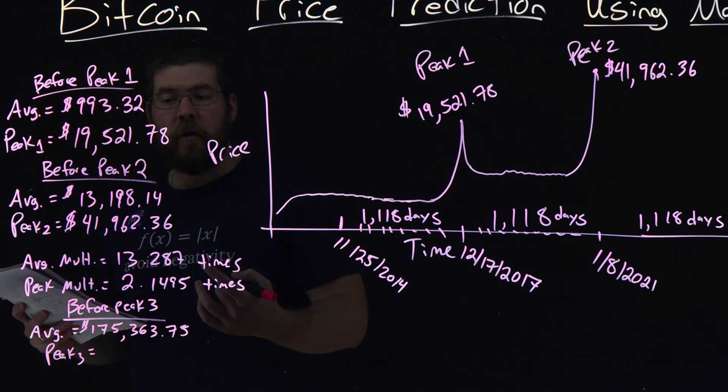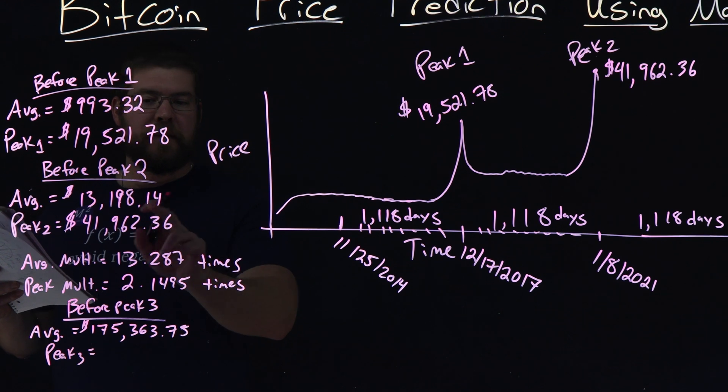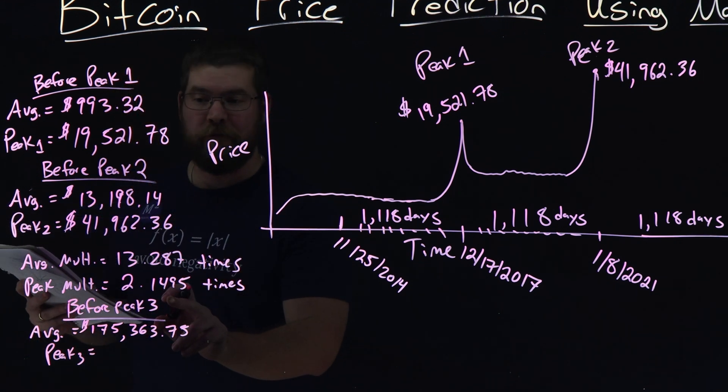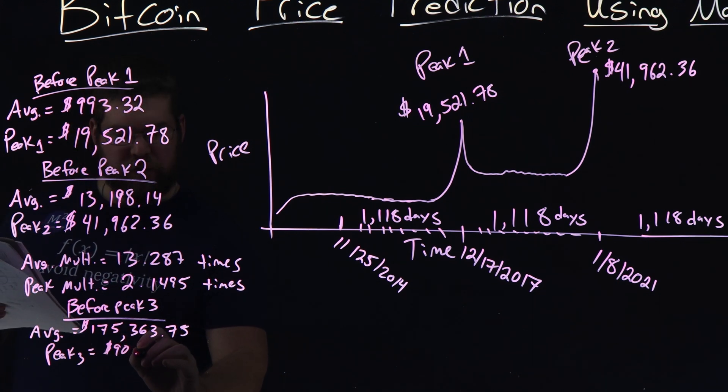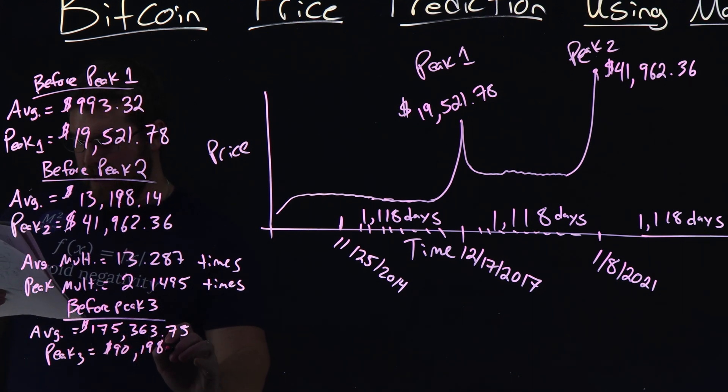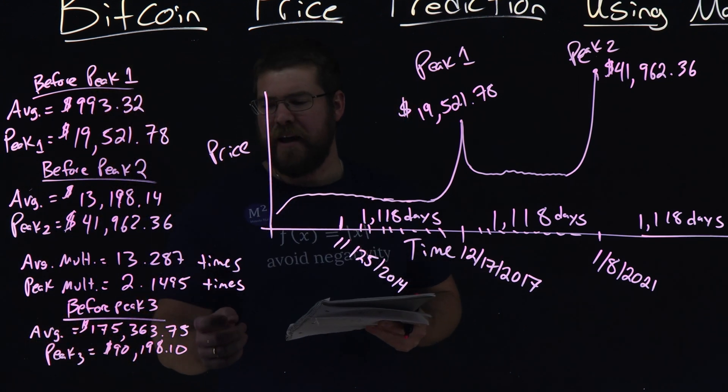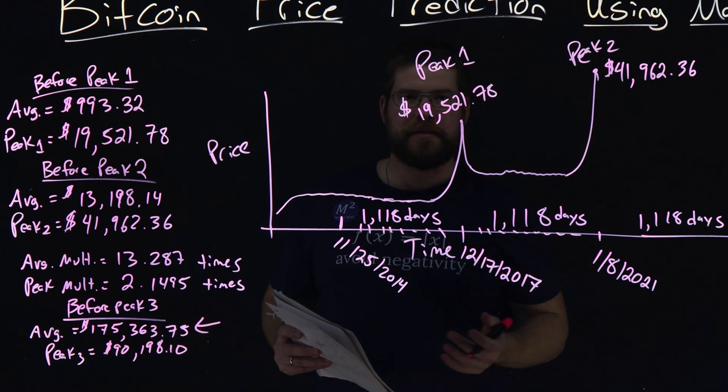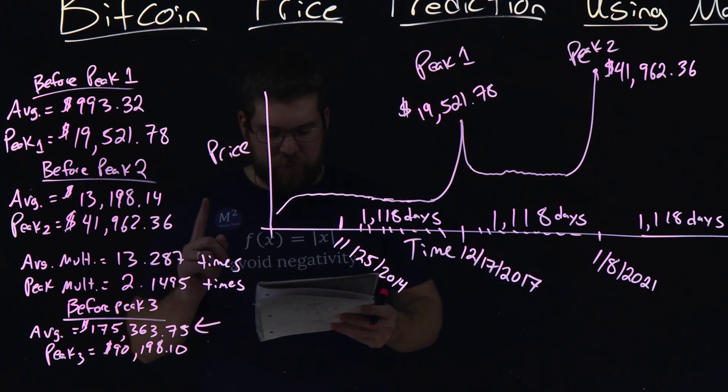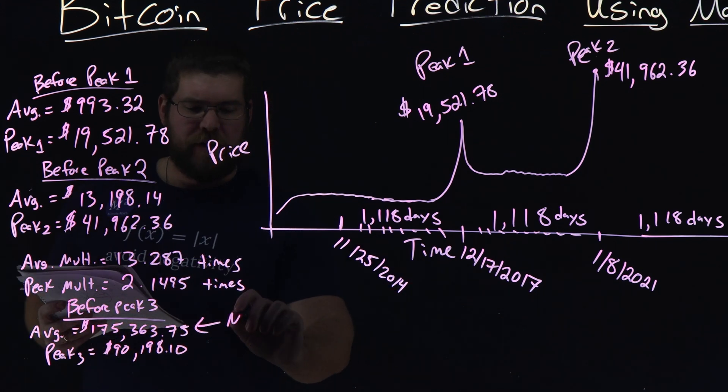But I think this could give us a good peak three value. So if I do that multiplier, I took my peak two, 41,962, and multiply it by 2.1495, I'd get 90,198.10. But this doesn't really line up well. I really don't like this average to see what's the low point where it's going to kind of go to match up there. So I wanted to change this.